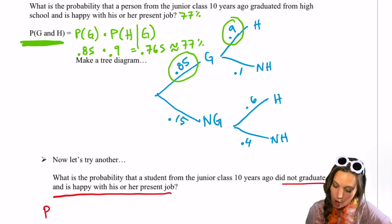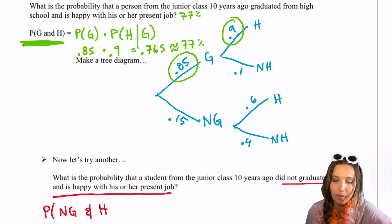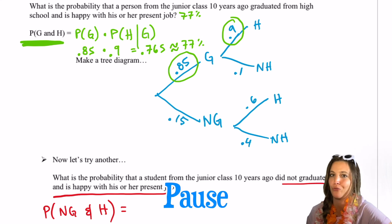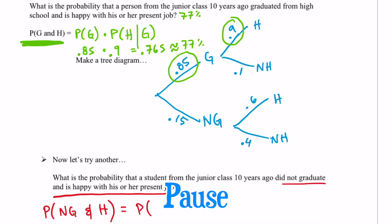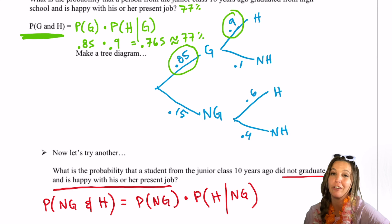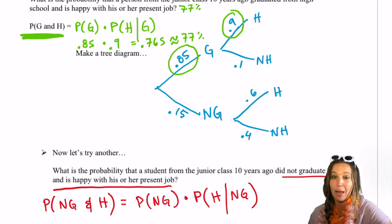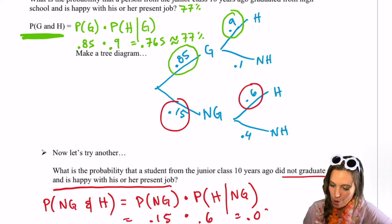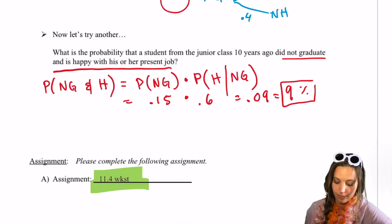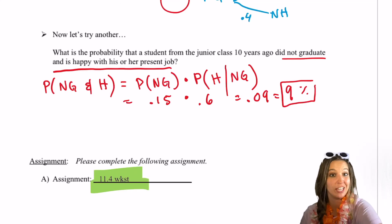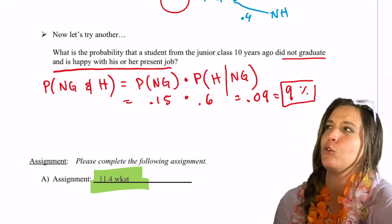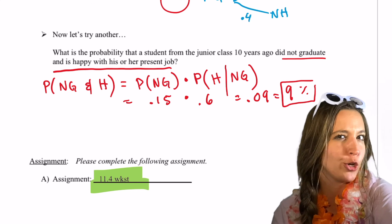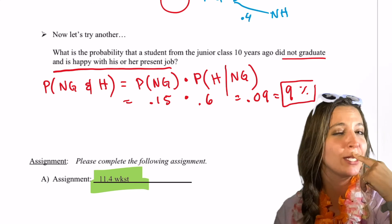Now what's the probability that we choose someone who did not graduate and is happy with their current job? The probability of not graduated times the probability of happy given not graduated: 0.15 × 0.6 = 0.09, which is 9%. Now it's time to complete your 11.4 assignment. I wonder what the probability of you doing well on our last test is given that you did all your assignments — probably a pretty high conditional probability there.